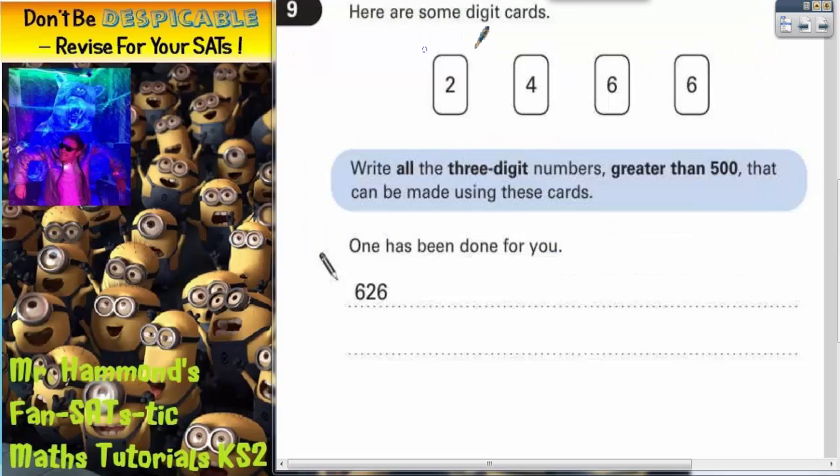Question number 9. Here are some digit cards: a 2, a 4, a 6, and a 6. It says write all the 3-digit numbers greater than 500 that can be made using these cards. One has been done for you and that's 626.